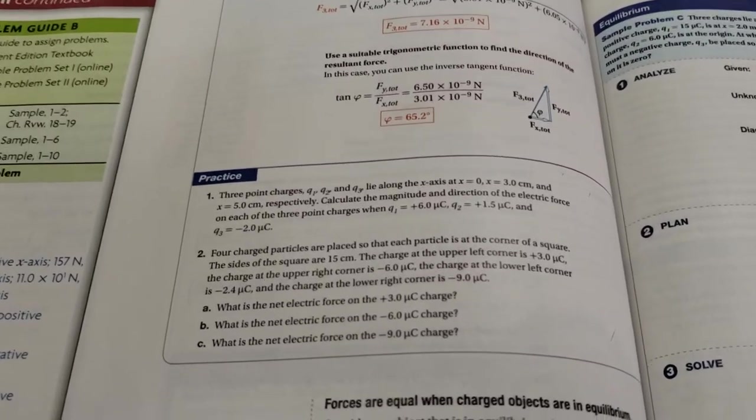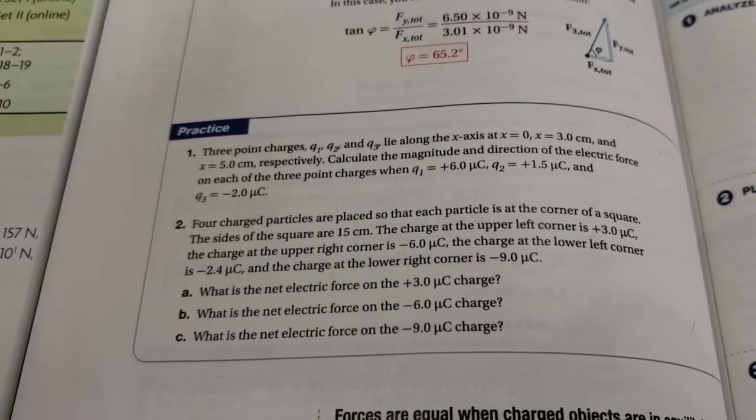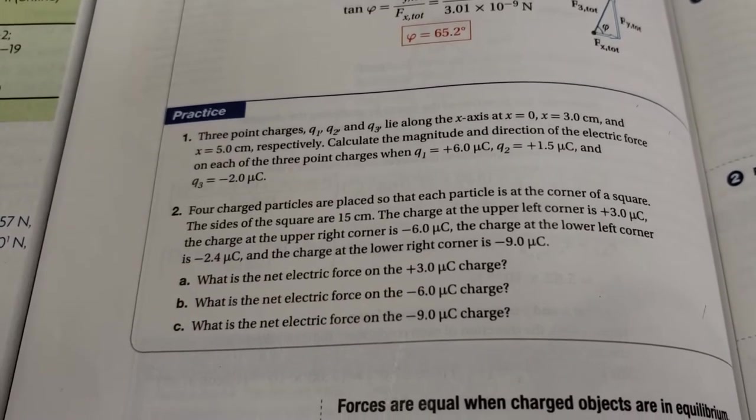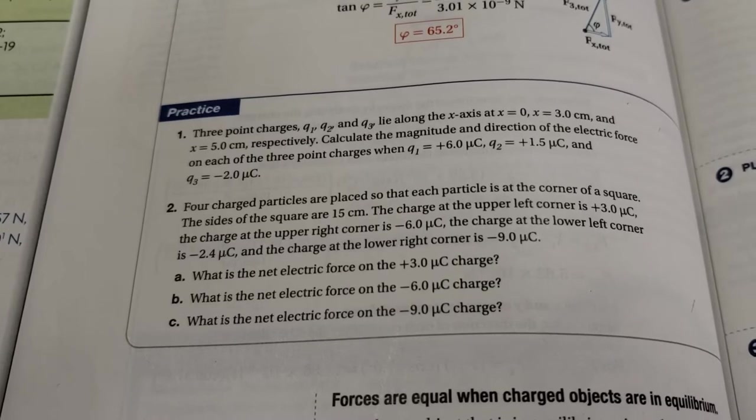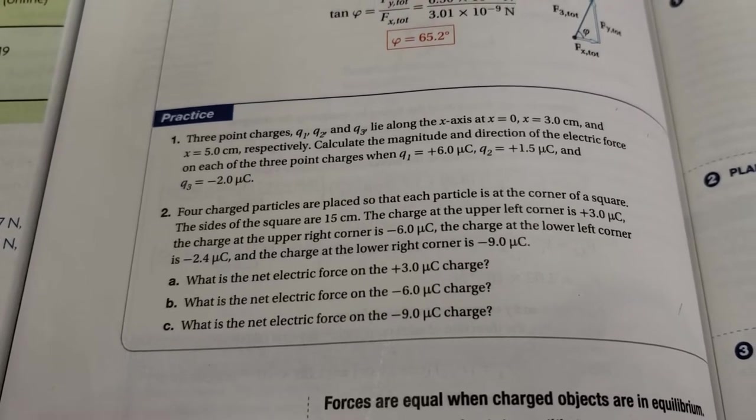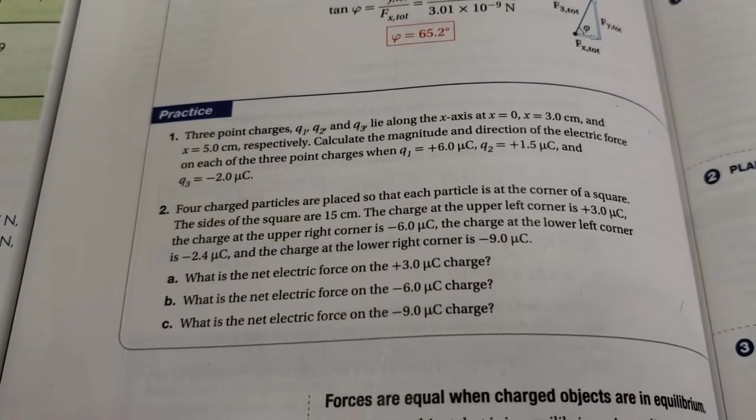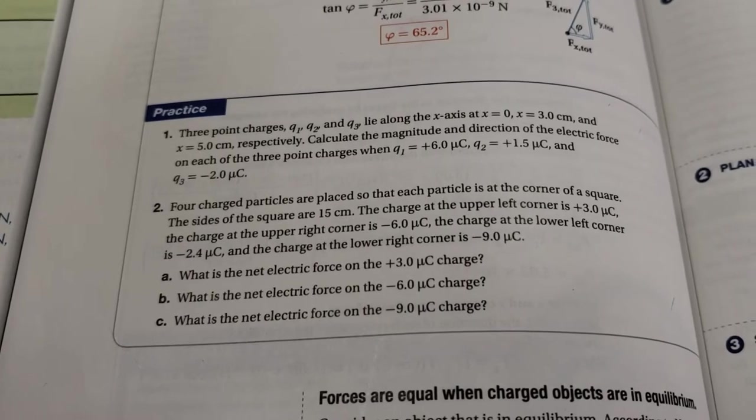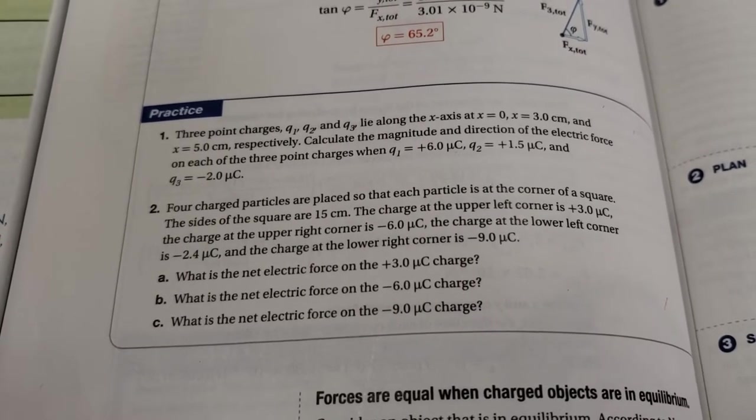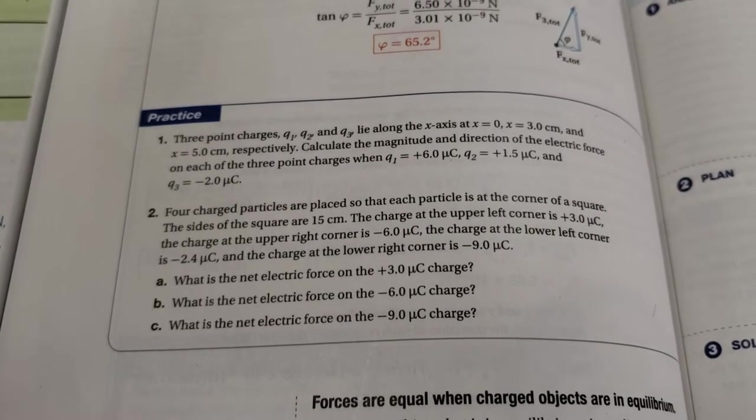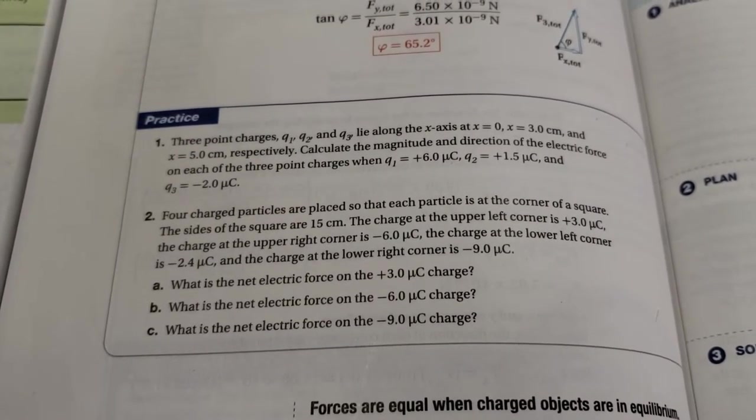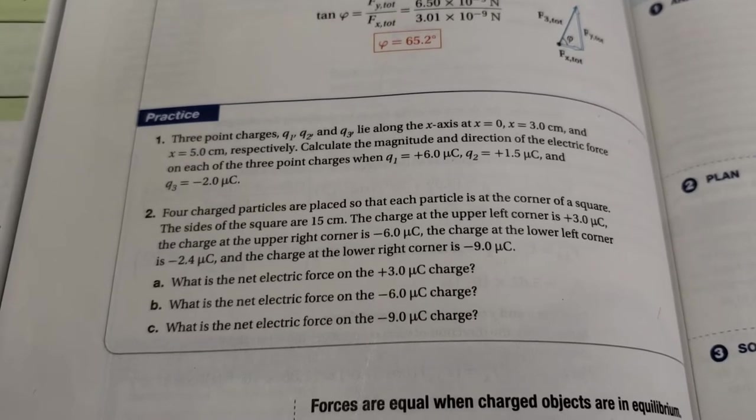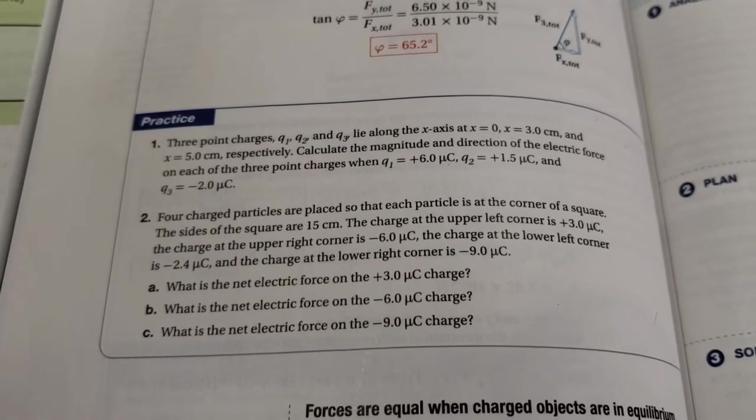Alright, here we are. We're working on the homework that goes with net force on charges. So here's the question. Number one: three point charges, charge 1, 2, and 3, lie on the x-axis at x equals 0 (the origin), x equals 3 centimeters, and x equals 5 centimeters. Now, these are locations on the x-axis, not distances between them necessarily. We have charges given: 6 microcoulombs, 1½ microcoulombs, and negative 2 microcoulombs.